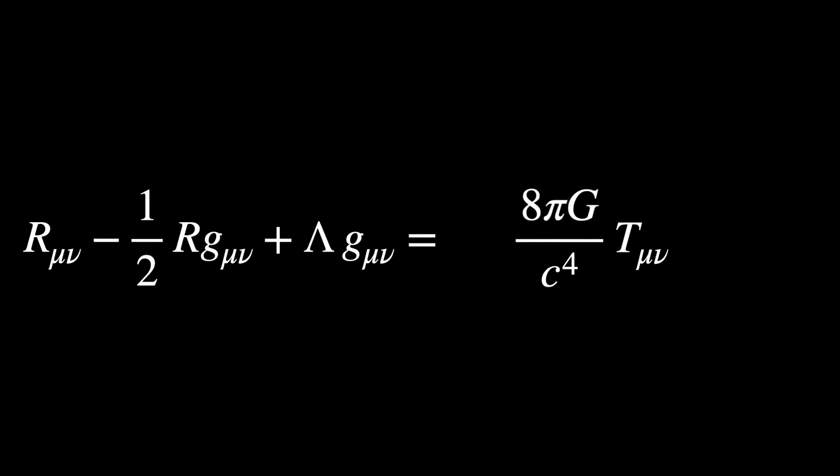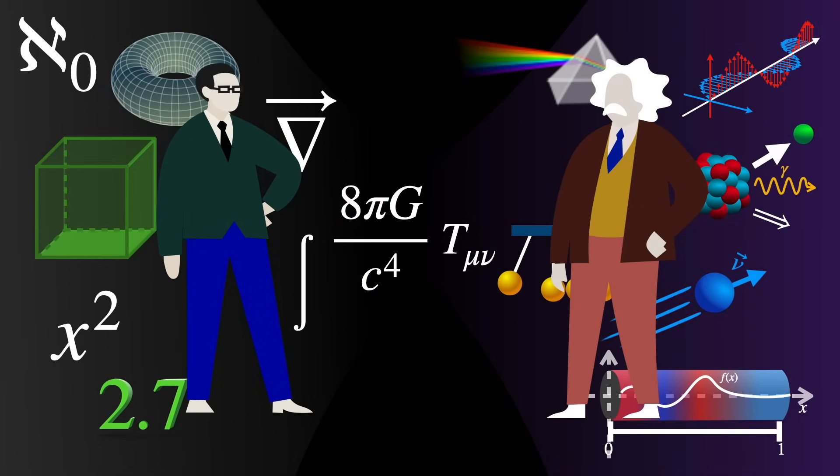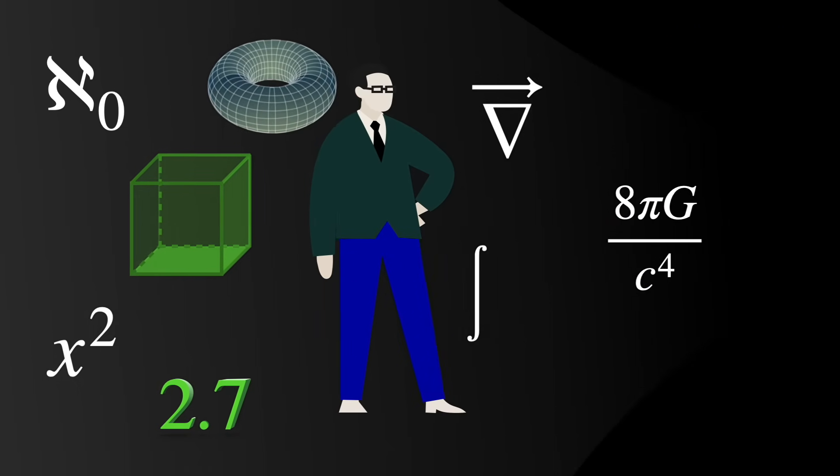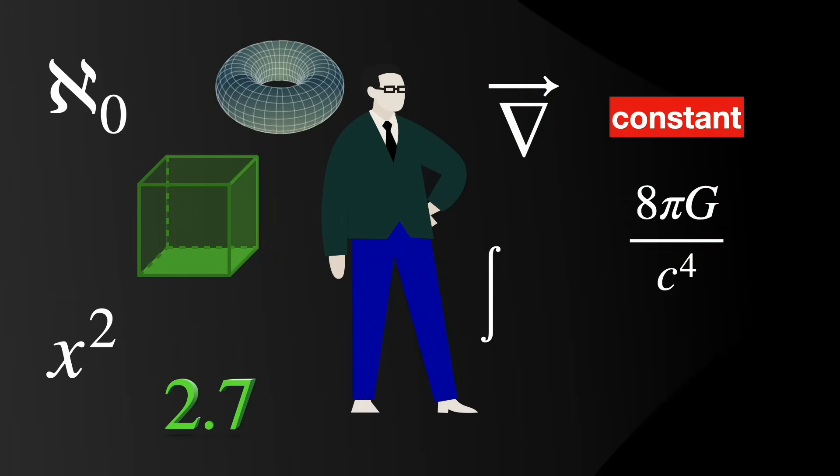When looking at the right-hand side of Einstein's field equations, mathematicians and physicists see different things from each other. For the mathematician, this constant is just that, a constant.